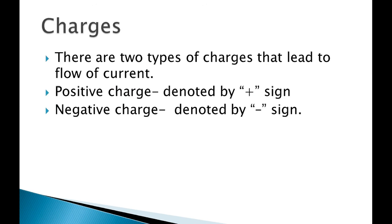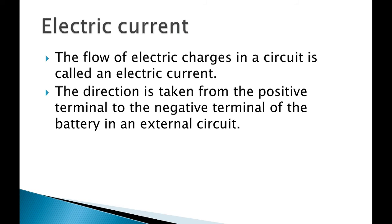Now, when current is being produced, we have two types of charges — because of charges only, current is produced. If there are no charges, current will not be produced. So we have two types of charges: a positive charge, denoted by a plus sign, and a negative charge, denoted by a negative sign.